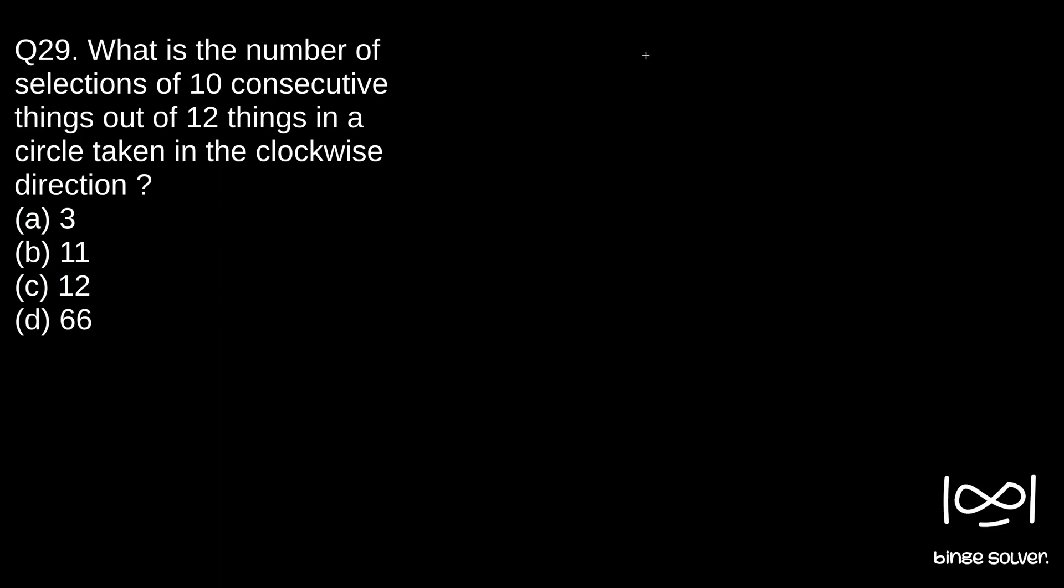So we have a circle and we have 12 things: 1, 2, 3, 4, 5, 6, 7, 8, 9, 10, 11, 12. So we have 12 things.